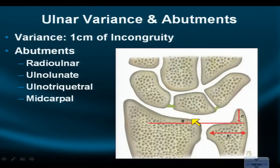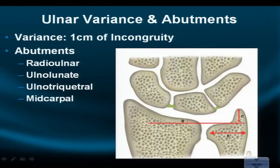Now, why do we use the term posture? Because true variance has always been measured on X-ray with strict criteria and a strict position. If you start throwing around the word variance on an MR without adhering to those standards, it can confuse and upset high-level clinicians and hand surgeons.